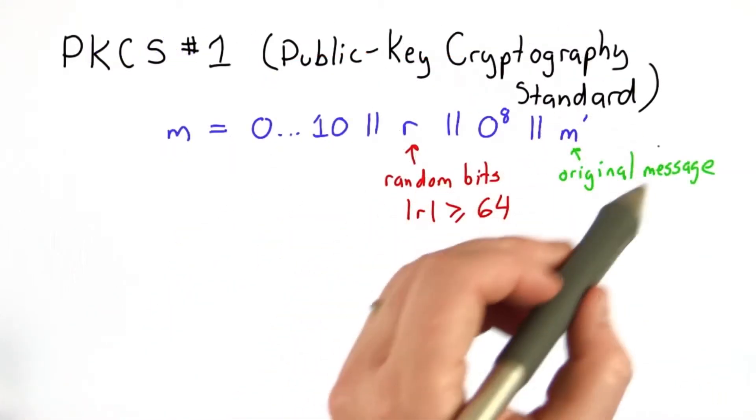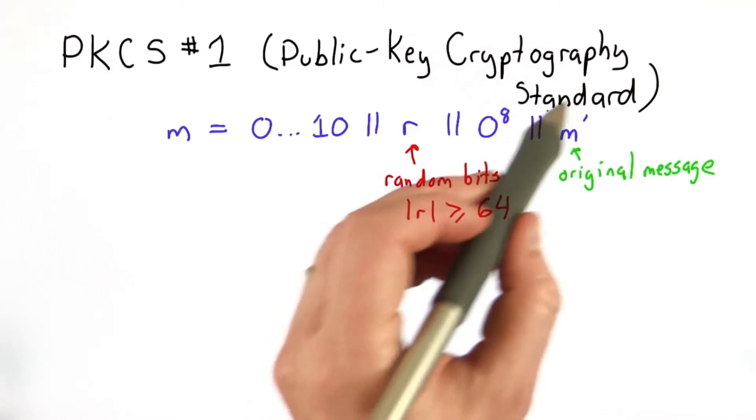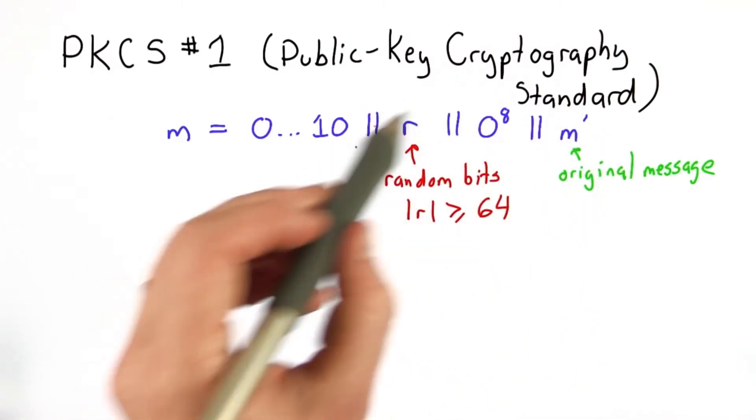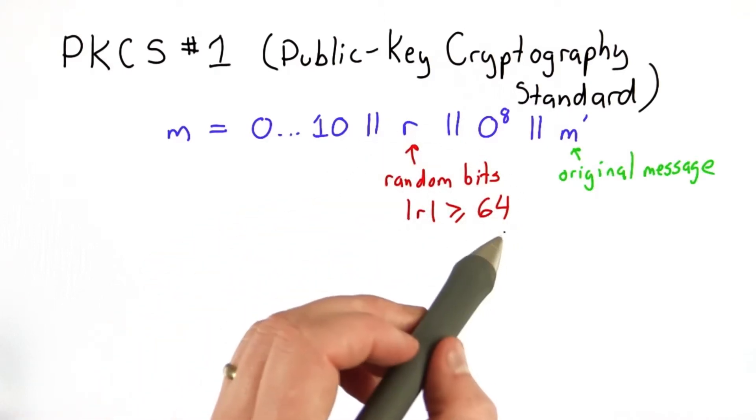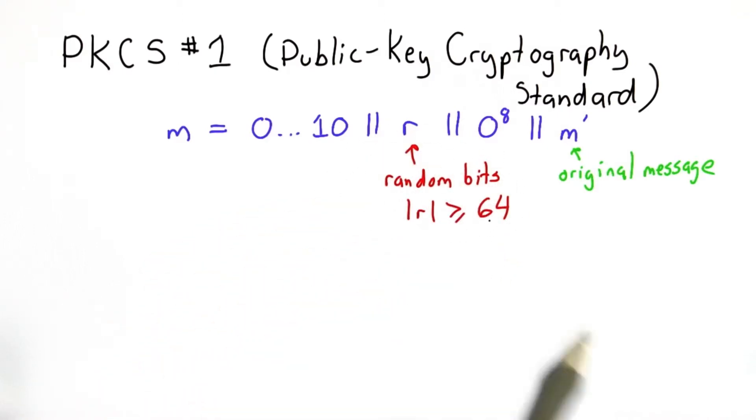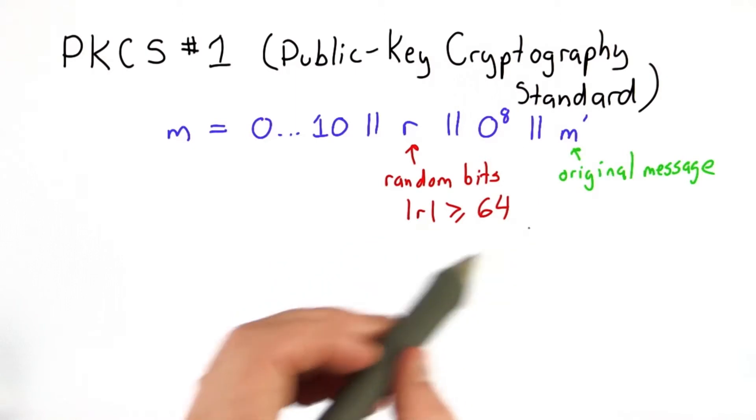This prevents the small message space attack, since even if the set of possible messages is fairly small, an attacker needs to try all possible choices for the random bits, which is at least 2 to the 64 of them, in order to test those messages.